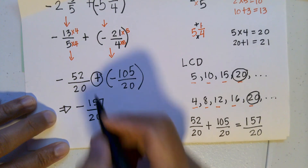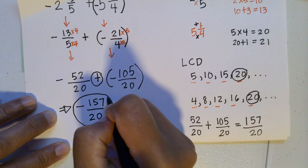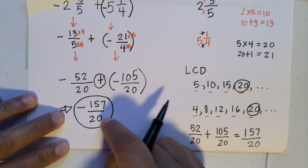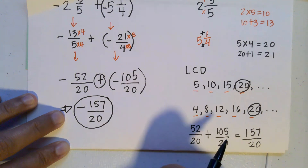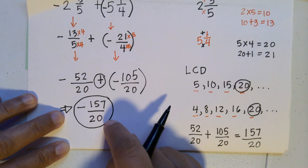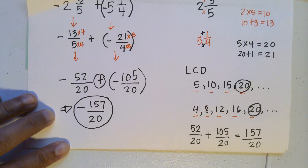From here, you can either change this into a mixed number, or simplify it by finding common factors of the numerator and denominator and dividing both by that common factor. Thank you very much, and I hope this helped.